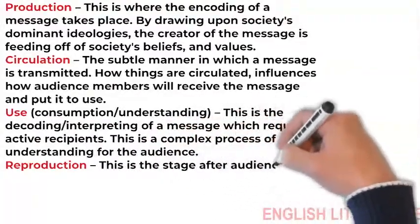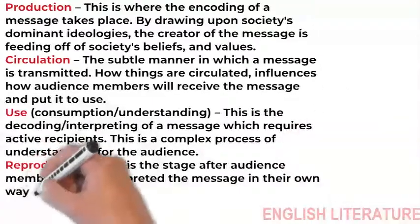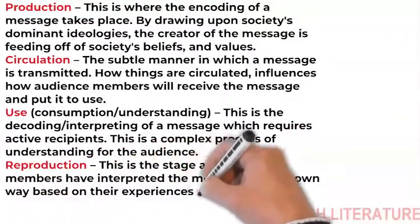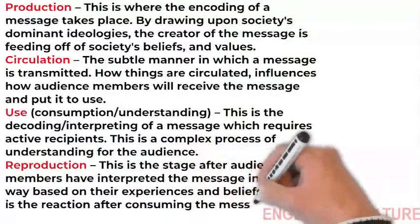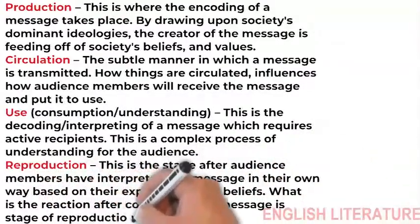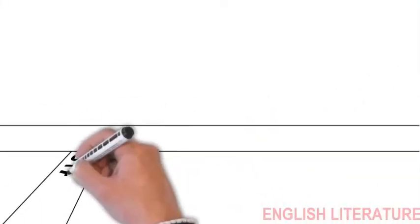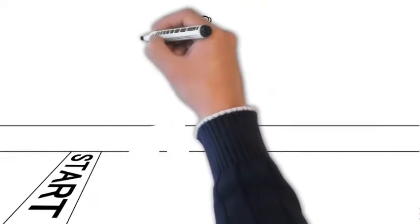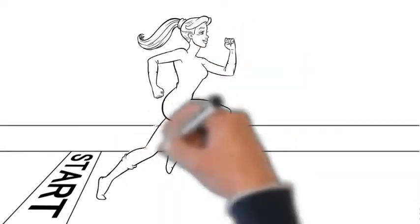Reproduction. This is the stage after audience members have interpreted the message in their own way based on their experiences and beliefs. What is the reaction after consuming the message is the stage of reproduction. Hall says each of these stages is relatively autonomous from the other. He meant to say that each of these steps is autonomous at the same time logically interdependent in the chain.